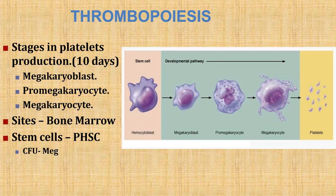Thrombopoiesis is the formation of platelets, also called thrombocytopoiesis. Platelets are the smallest formed elements and non-nucleated fragments of megakaryocytes, which are giant cells in the bone marrow. The stages in platelet production take place over 10 days: formation of megakaryoblast, promegakaryocyte (megakaryopoiesis), formation of megakaryocyte, and finally formation of platelets. All this production takes place in the bone marrow from pluripotent hematopoietic stem cells.